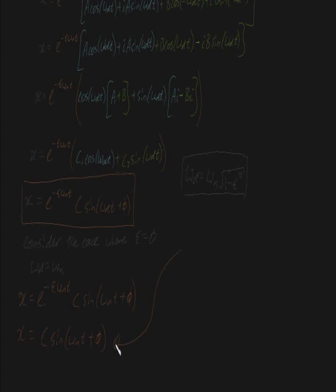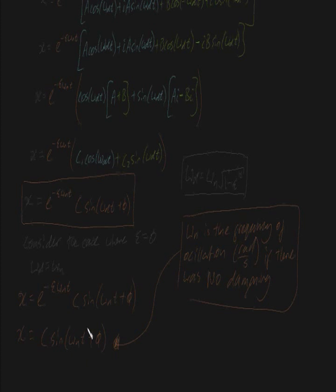When zeta equals zero, the damping constant c must also equal zero, from a formula shown in the first video. So what we've shown is that omega n is the frequency of oscillation in radians per second if there is no damping. And this is why we call omega d the damped natural frequency — because it's the frequency of oscillation when we do have damping, when zeta is less than one but not equal to zero. So we have two crucial equations: one for when zeta equals zero, and one for when zeta is less than one but not equal to zero. That finishes underdamped motion.